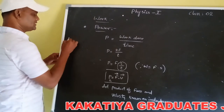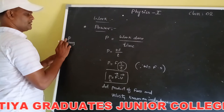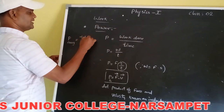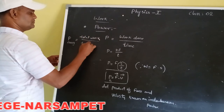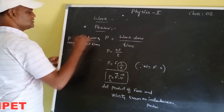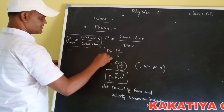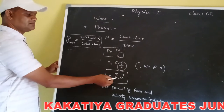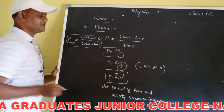Average power is denoted as P-average. P-average equals total work done divided by total time. This is the definition of average power. Instantaneous power, on the other hand, is the dot product of force and velocity.